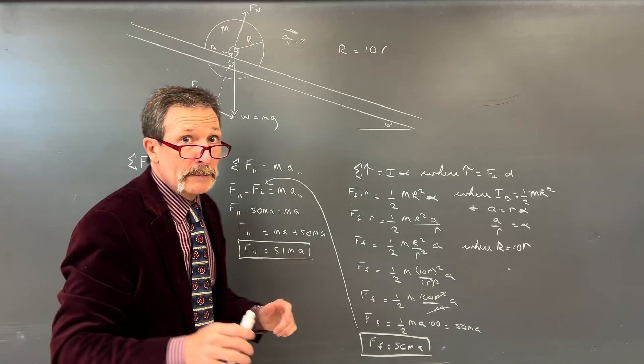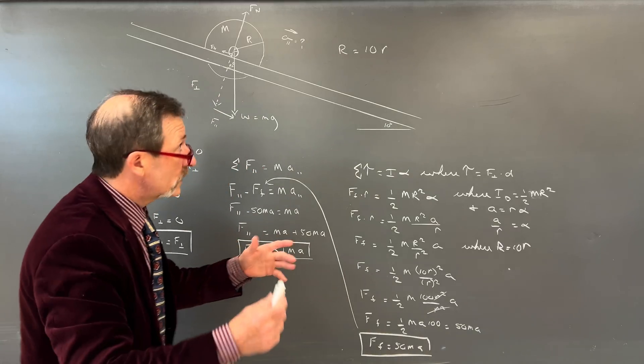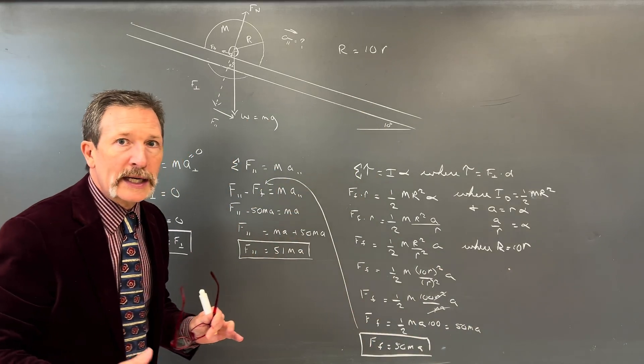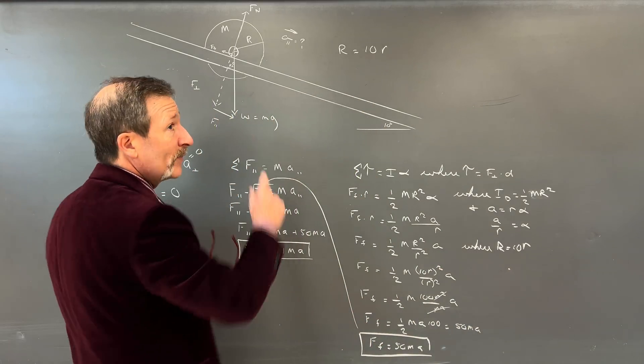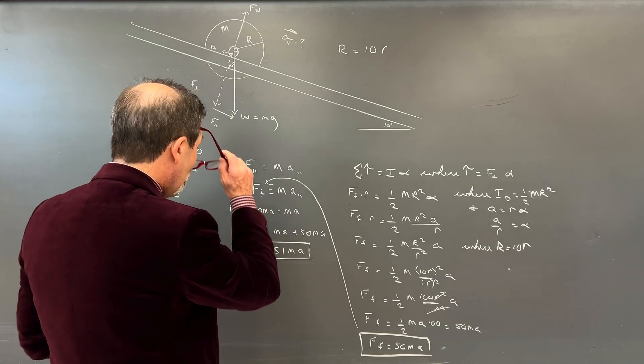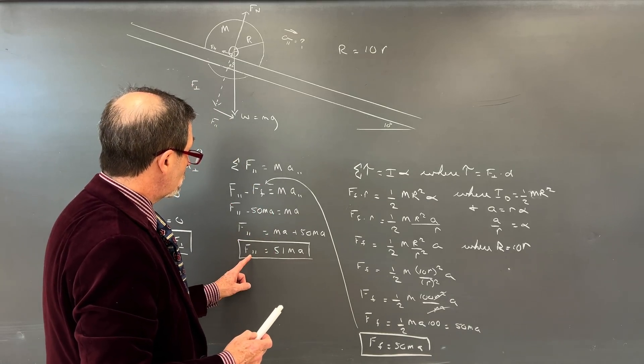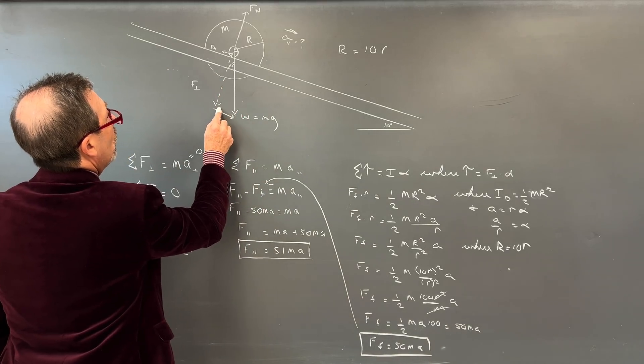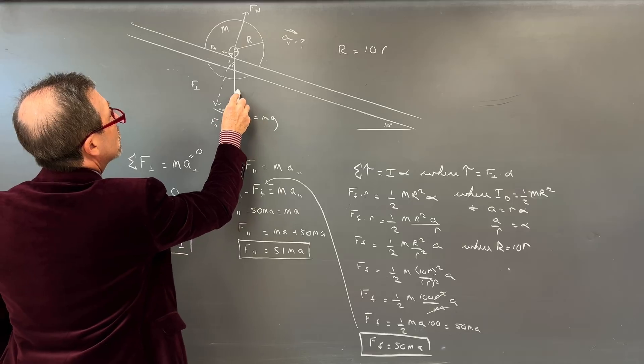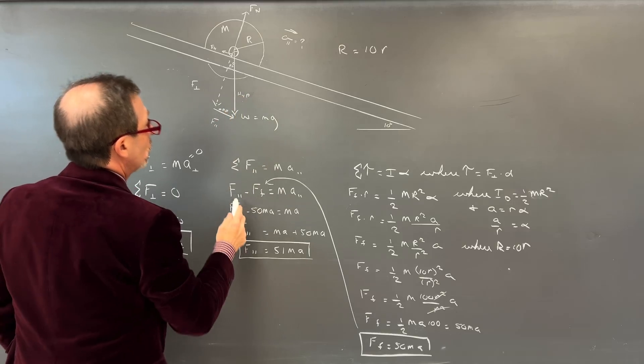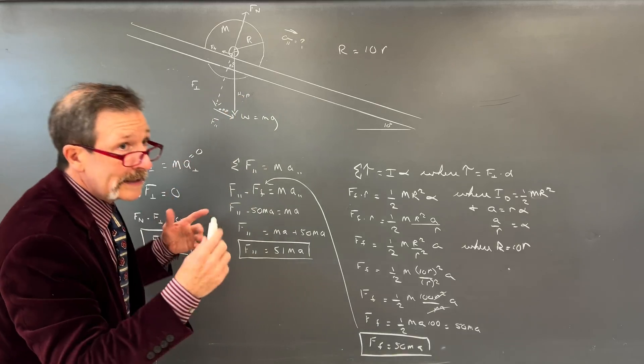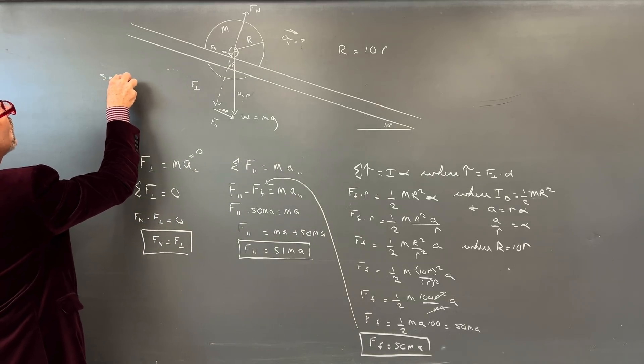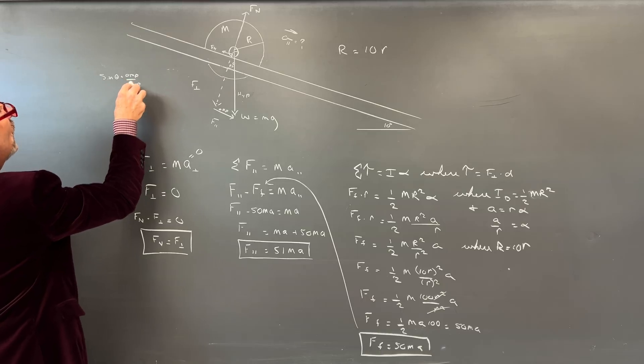So I can end up saying our force of friction equals 1 half mass. And then I'd have 10 r all over r. Each of these has to be squared. Force of friction equals 1 half M 100 r all over, and then squared all over r squared a.